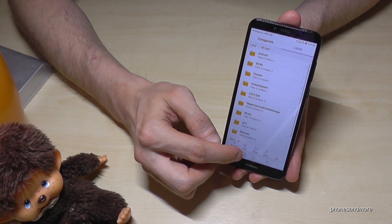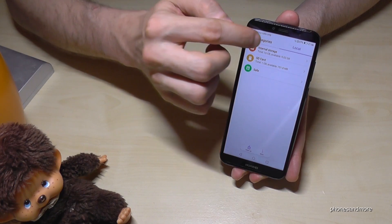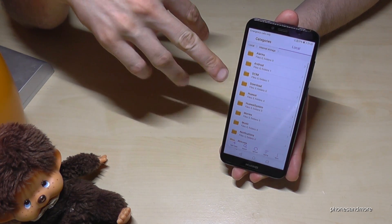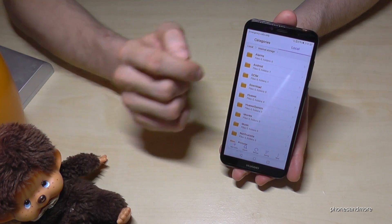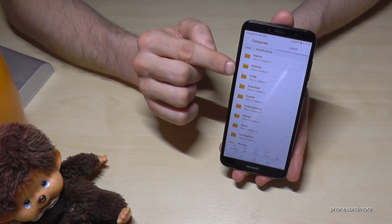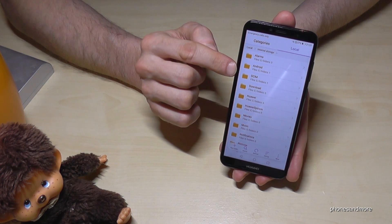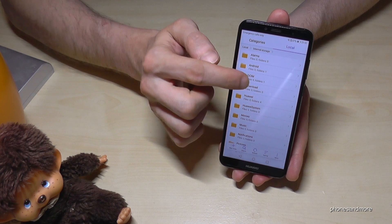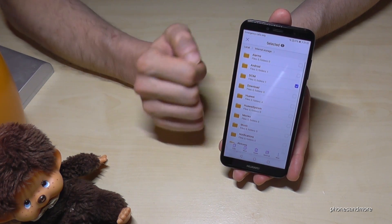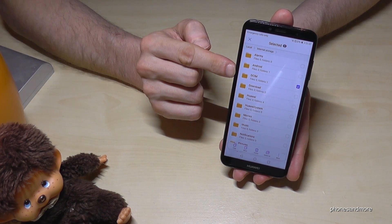So let me go back again to my internal storage. Because I want to show you also how to transfer folders. You can also transfer maybe the folder for the DCAM, for the own camera pictures. Let me hold it. It's marked now. Same thing like the files.